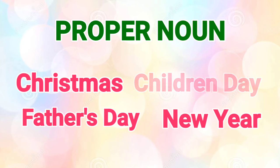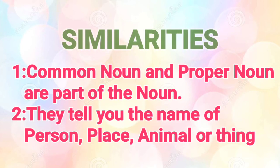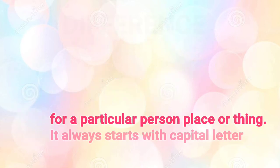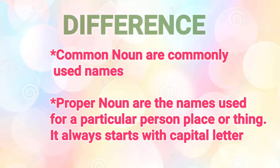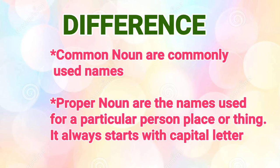So children, there is also a similarity — proper noun and common noun are both part of the noun, which is why they are names of person, place, animal, or thing. But common nouns are commonly used; it can be anyone, anywhere, or anything. Proper nouns are the specific names of those things and always start with a capital letter. These are the basic differences by which you can identify common noun and proper noun.